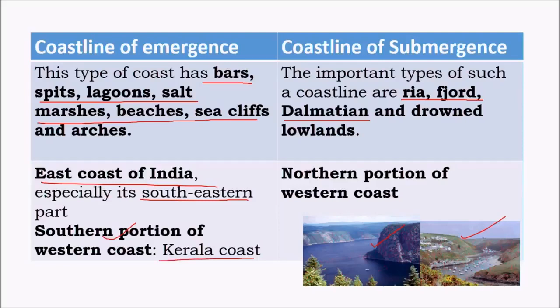The coastline of submergence is found along the north-western coast — that is, the Mumbai-Gujarat coast. For example, the Rann of Kutch is an example of a coastline of submergence.